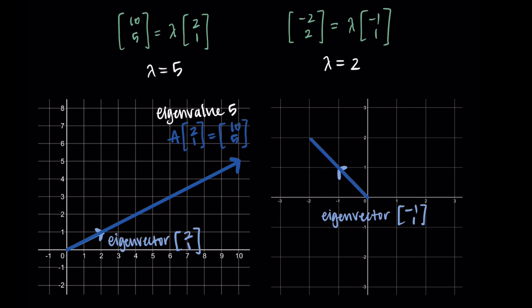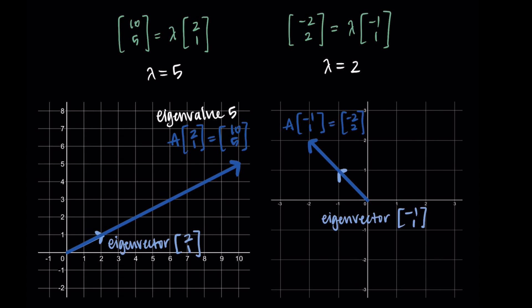For our second eigenvector, where we have [-1, 1], what the matrix A does to that specific vector is that it's scaling it by 2, so it's an eigenvalue of 2, and we're getting our resulting vector [-2, 2]. A, when applied to other vectors that aren't these special vectors, probably does something else. It's probably not just scaling it. But the eigenvectors are these special vectors where all A does to them is scale them.